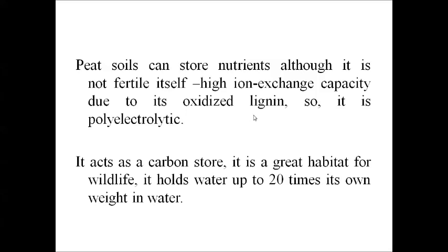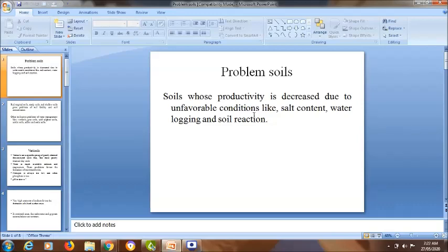Peat soil acts as a carbon store aur it is a great habitat for wildlife. Isme fertility apne aap mein kam hoti hai kyunki usme oxidized lignin hota hai — yeh iska drawback hai. Lekin peat type soil mein organic matter zyada amount mein present hota hai, isiliye iski water holding capacity 20 times its own weight in water hai. Yeh carbon ka ek storehouse hai. Agar isme better drainage kar di jaaye to isse best koi aur soil nahi hai. Thank you.